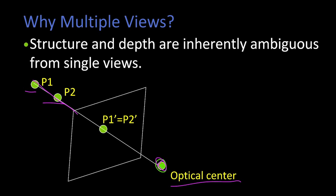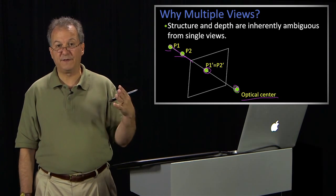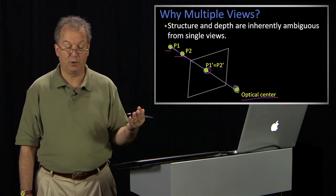And of course, because they project along the same ray, they land in the same spot, P1 prime, P2 prime. And so that's where the ambiguity comes from. And the question is how to figure out where P1 and P2 really are.